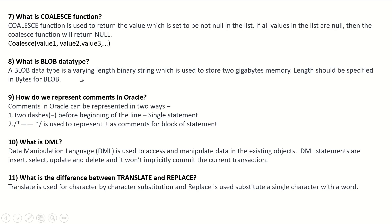What is the BLOB data type? A BLOB data type is a varying-length binary string used to store up to 2 gigabytes of memory. Length should be specified in bytes for BLOB. How do we represent comments in Oracle? Comments in Oracle can be represented in two ways: two slashes before the beginning of the line for a single statement, or slash-star ... star-slash for a block of statements.